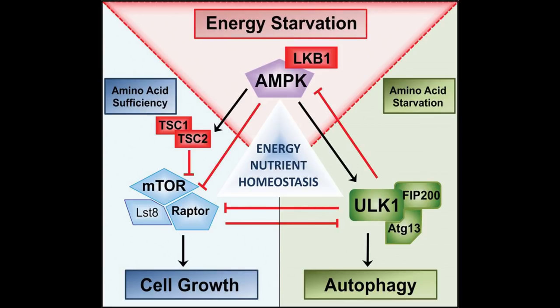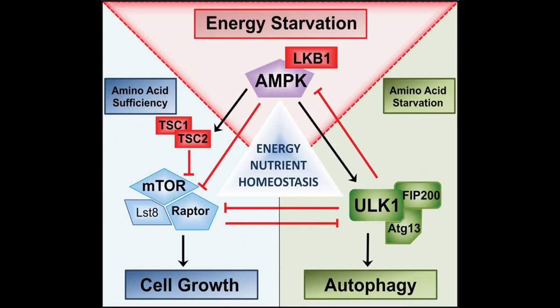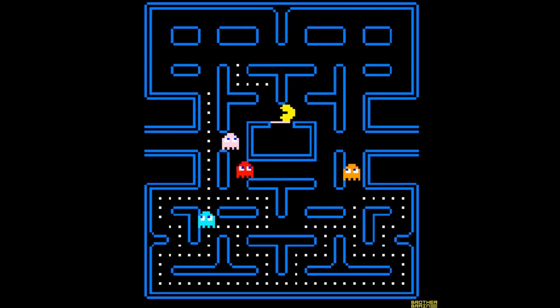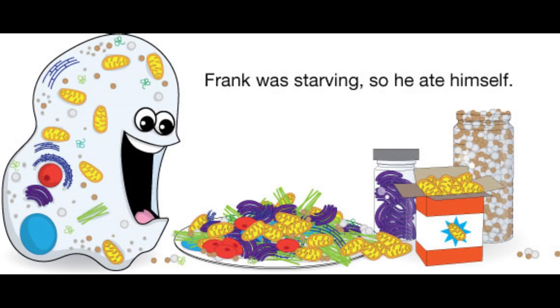AMPK is another fuel sensor — the opposite of mTOR — which gets elevated when you run out of nutrients and your body's endogenous energy. This triggers a metabolic pathway called autophagy, which is the process of cellular recycling: your healthy cells start searching out old and worn-out cells to convert back into energy.